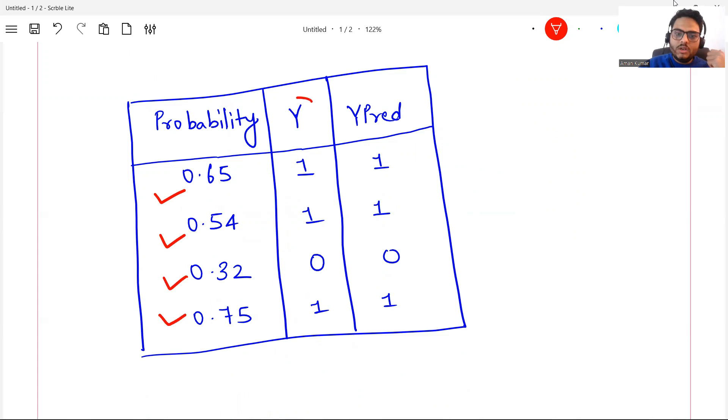Suppose these are the probabilities, and this is your Y actual and this is your Y predicted. Suppose your threshold is 0.5. If your probability is above 0.5, you call that one class or you call that zero class.